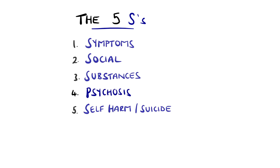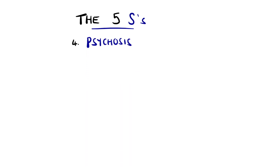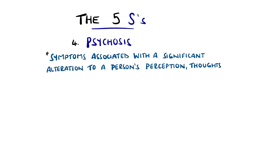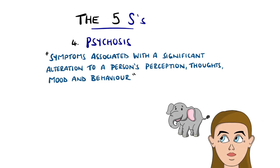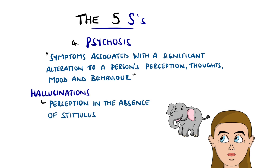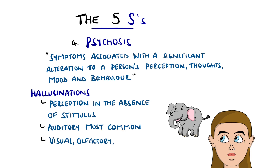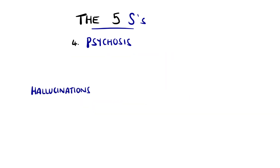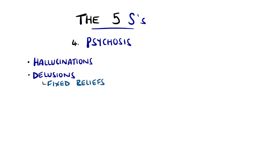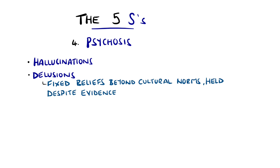Next is psychosis. It's a term used to describe symptoms associated with significant alterations to a person's perception, thoughts, mood or behaviour. Hallucinations are an example, defined as perceptions in the absence of a stimulus. Auditory hallucinations are the most common, and can mean hearing voices as a commentary or even as direct commands. Other hallucinations include visual, olfactory and touch. Delusions are fixed beliefs outside expected cultural norms that are held despite evidence to the contrary — examples being delusions of thought, like thought insertion.